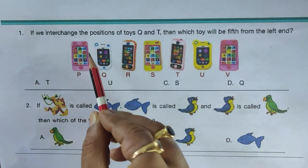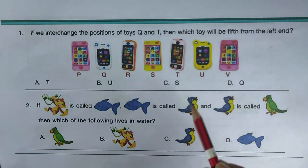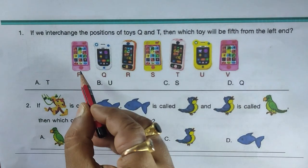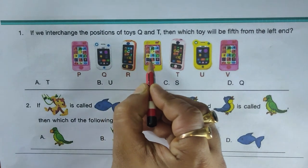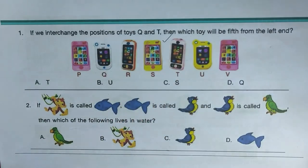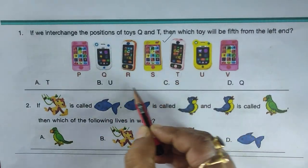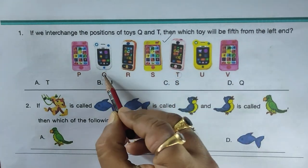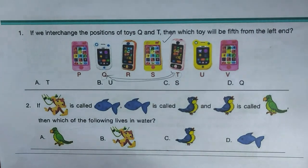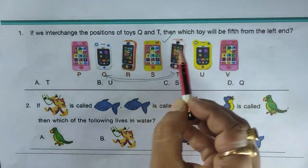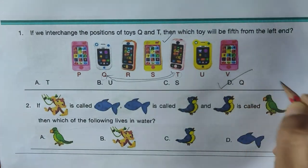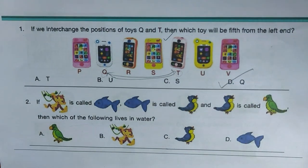Next question: if we interchange the positions of Q and T, which toy will be fifth from the left end? The fifth position currently holds T. After interchanging, Q takes T's position, so Q becomes the fifth from the left. Option D is the right answer.